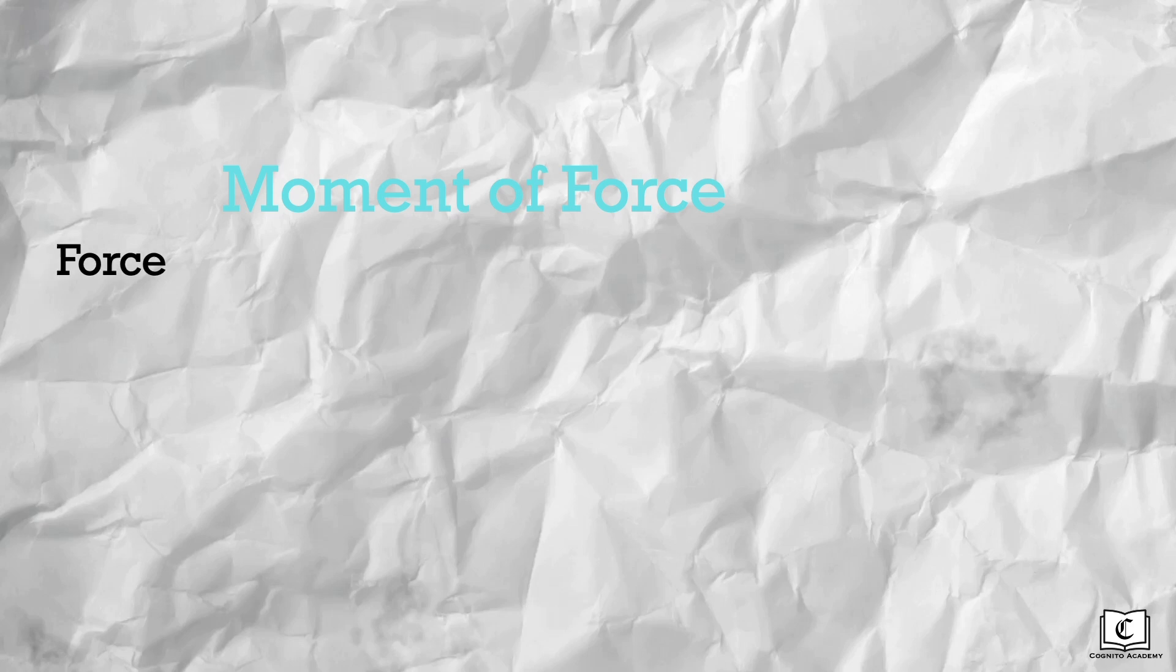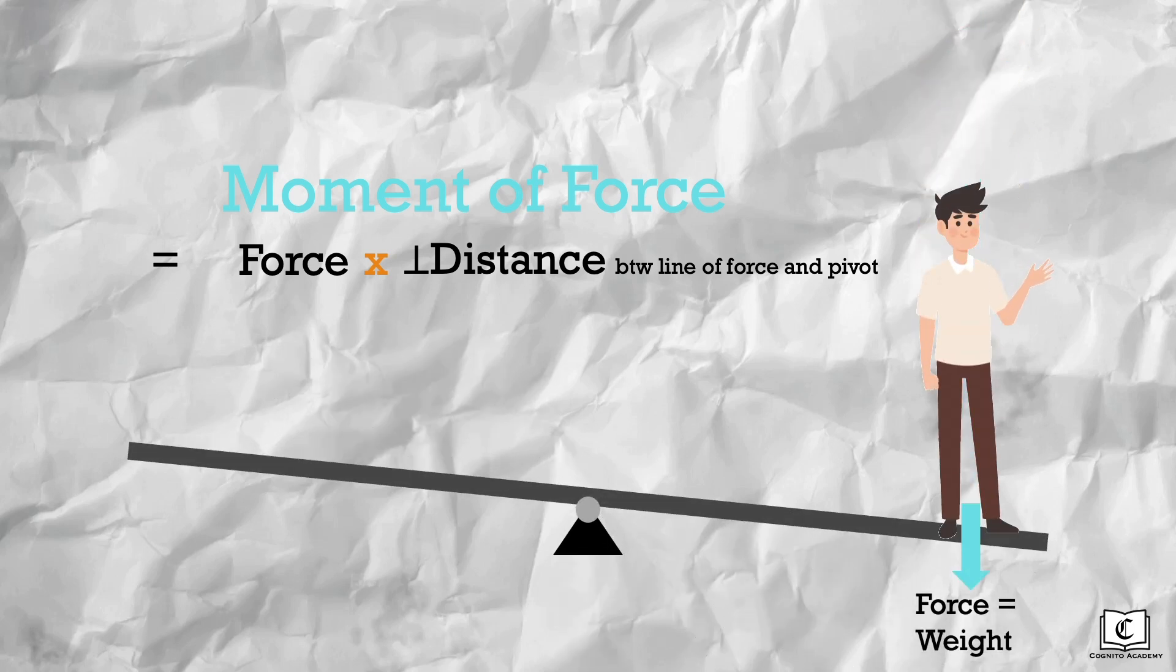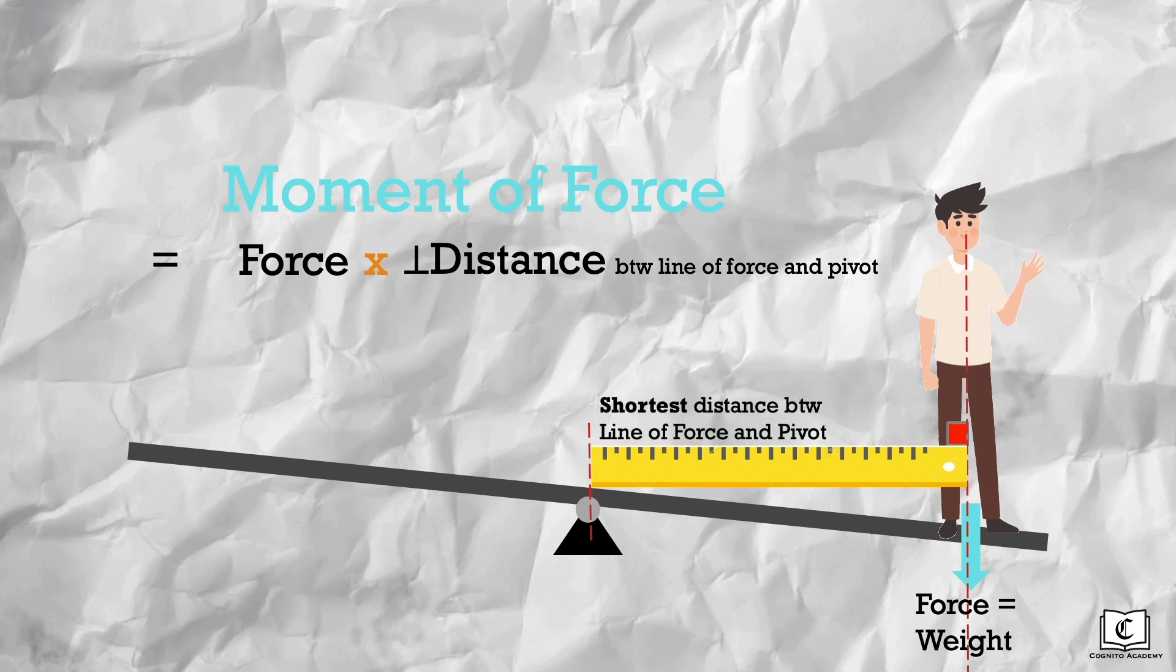Mathematically, moment of force is given by force multiplied by the perpendicular distance between the line of force and the pivot. In the context of this seesaw, the force is the weight of Jill. Distance, as we can see, is given by the ruler. Take note that the ruler is perpendicular to the line of force, measuring perpendicularly from the line of force to the pivot. Another way to look at this perpendicular distance is just the shortest distance between the line of force and the pivot.